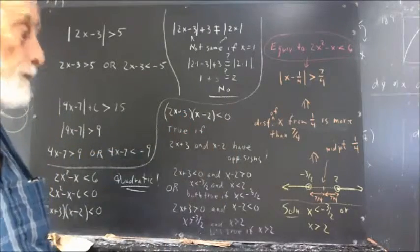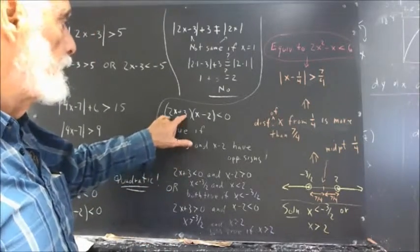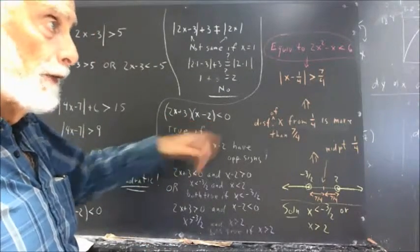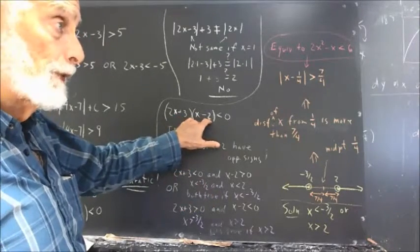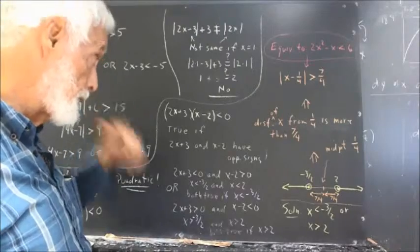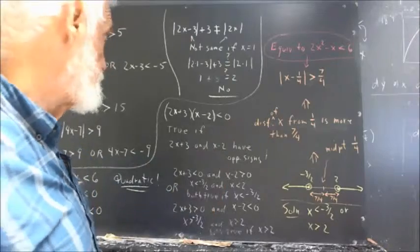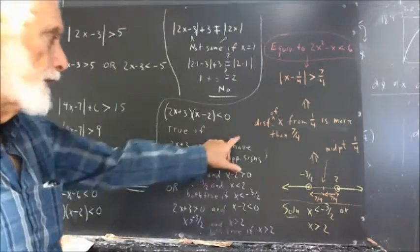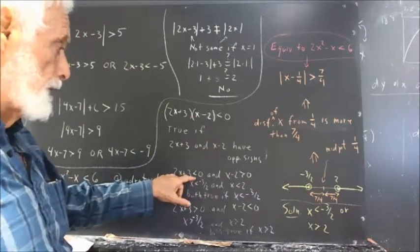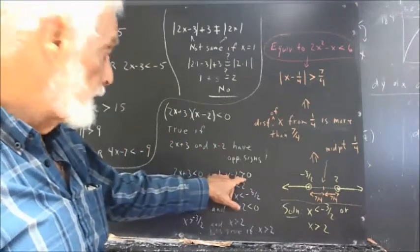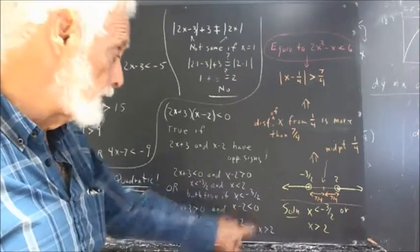How can the product of two factors be less than 0? There is only one way: the two quantities must have opposite signs. So either 2x plus 3 is less than 0 and x minus 2 is greater than 0, or 2x plus 3 is greater than 0 and x minus 2 is less than 0.